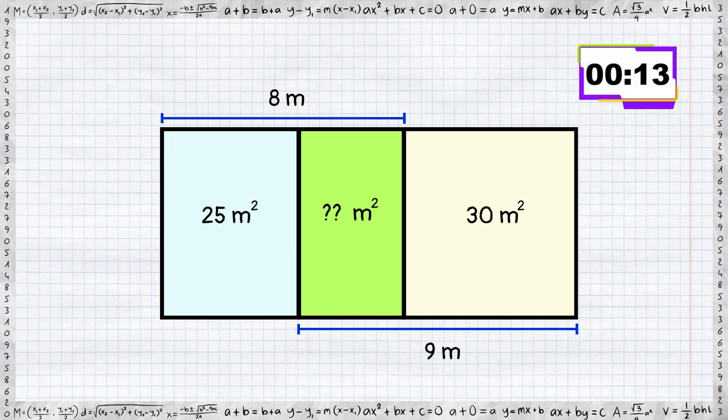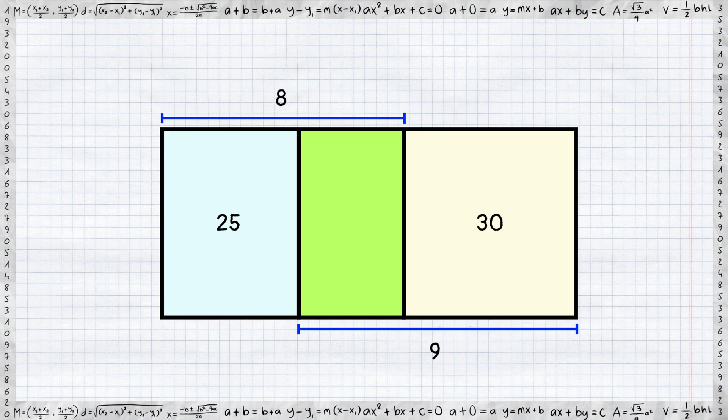Here we go! Alright, let's tackle this puzzle. To simplify things, I propose to forget about the units and focus on the numbers. Let's say the width of the second rectangle is represented by the variable x.